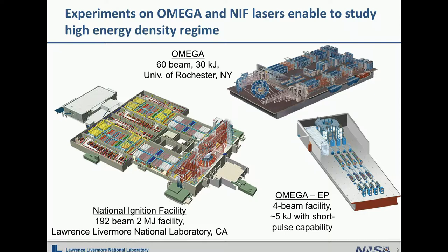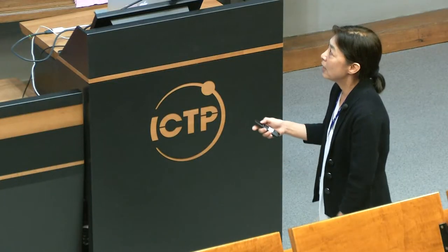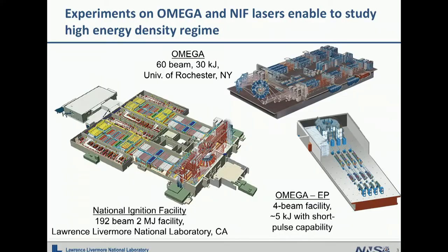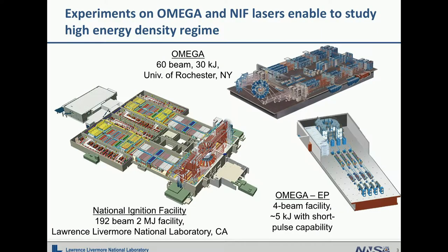Two of the Omega EP beams can turn into a short pulse laser, which is up to 10²⁰ watts per square centimeter of intensity — that's very unique. We also do experiments on the National Ignition Facility, located at Lawrence Livermore National Laboratory in California, which has 192 beams creating up to 2 megajoules of laser energy in 3-omega, converging into a 10-meter target chamber. The laser bay alone is 3 football fields long to create the 2 megajoules of laser.